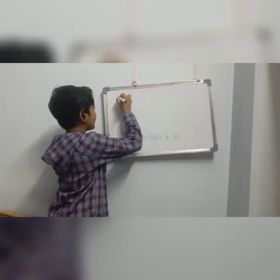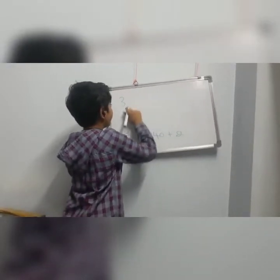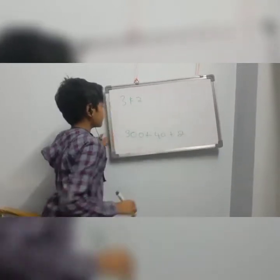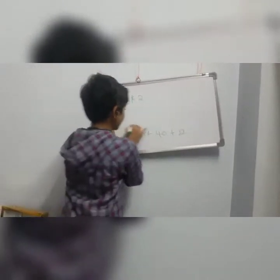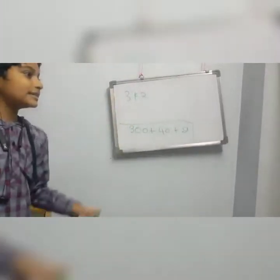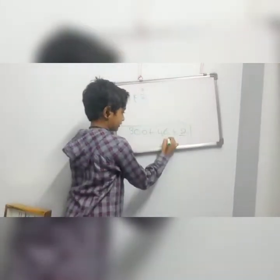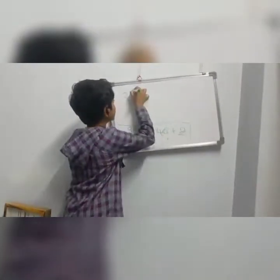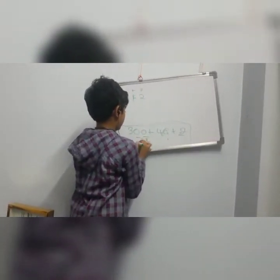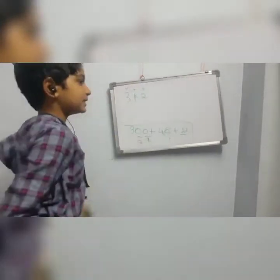Now, what is the expanded form of 342? I told you this expanded form is to divide the places easily. Now divide the places easily: ones, tens, hundreds. That's it — you divide the places easily.